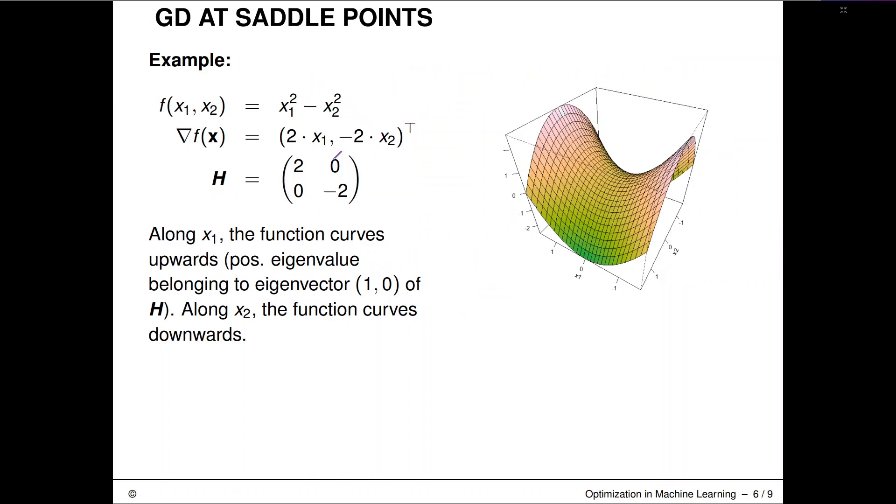Very interesting are saddle points. Here is one that we have created through a quadratic form. This is simply X1 squared minus X2 squared. Here you can see the gradient, the Hessian matrix, and you can immediately see the eigen spectrum. This has an eigenvalue of 2 and an eigenvalue of minus 2.